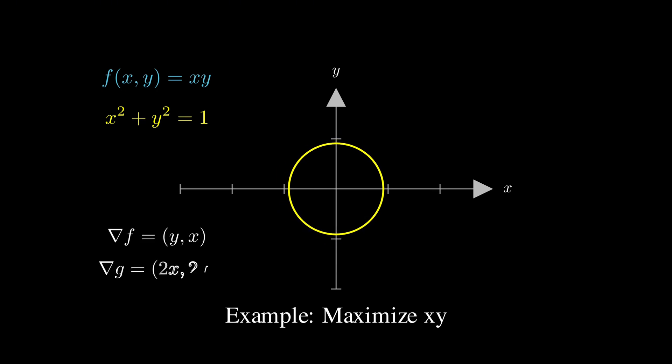The gradient of f has components y and x, while the gradient of g has components 2x and 2y. When we solve the system of equations from our Lagrange condition, we find 4 critical points. 2 maxima at x equals y equals plus or minus 1 over square root of 2, and 2 minima at the points where x and y have opposite signs.